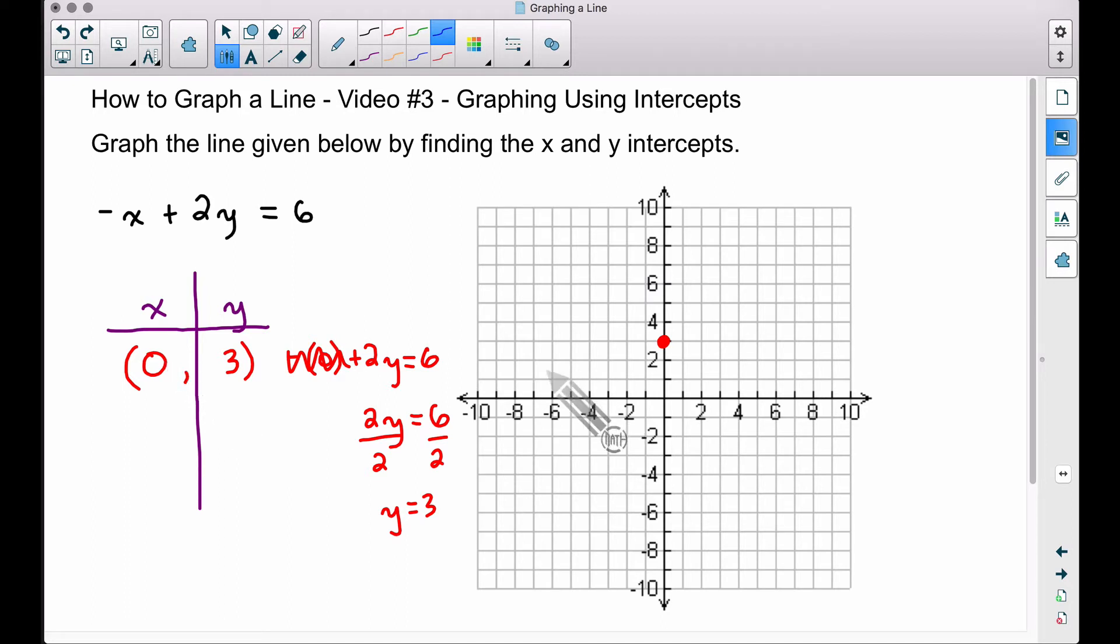All right, so now, let's think about x-intercepts. This would be an x-intercept, this would be an x-intercept, this would be an x-intercept. Well, let's write down some ordered pairs. Over here we got (10, 0), right here we got (6, 0), and over here we got (-4, 0). What do these x-intercepts, these dots on the x-axis have in common? The y-value is always 0.